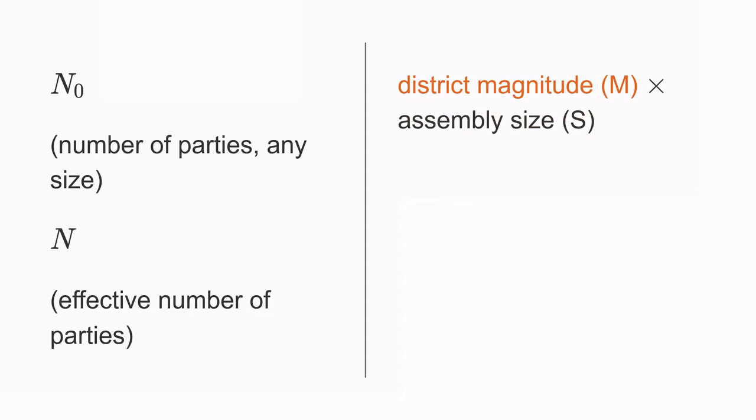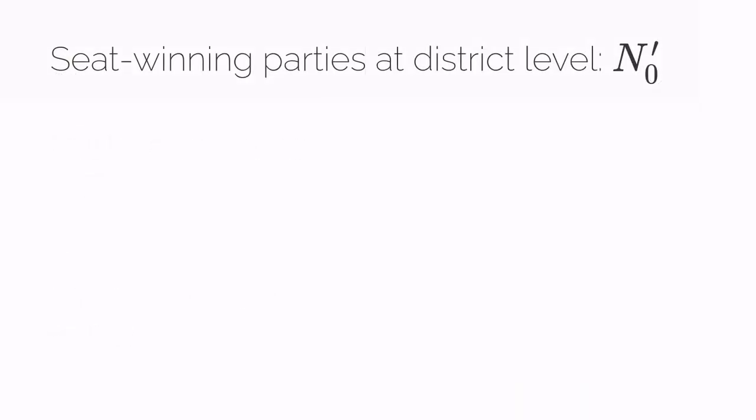Let's start by thinking about the number of parties that can win seats in a district. I'm going to use that little apostrophe to show that we're talking about something happening in a district rather than nationally. And I'll use that little zero to show that we're talking about the raw number of parties rather than the effective number.